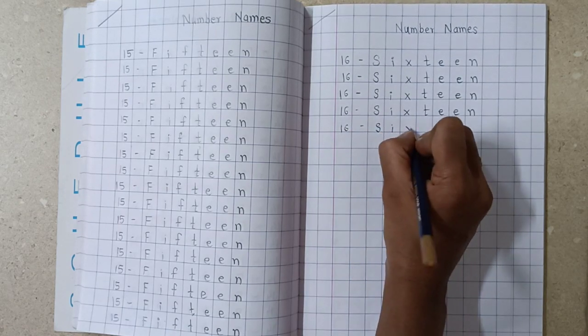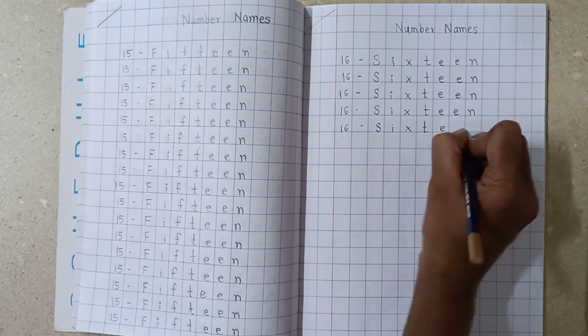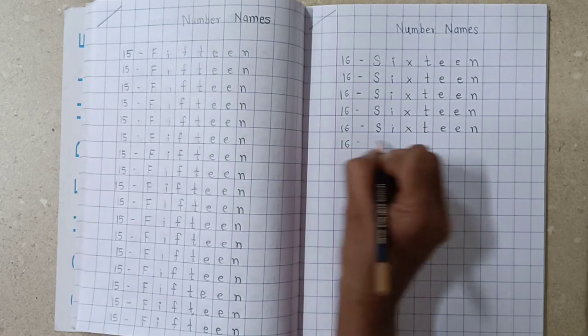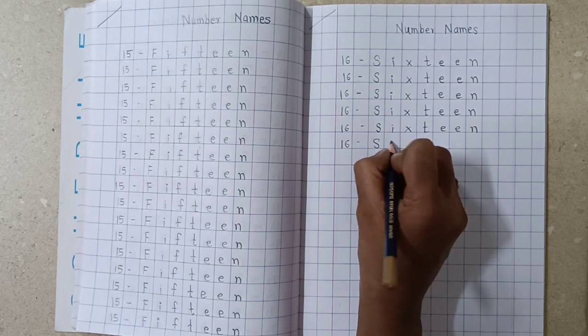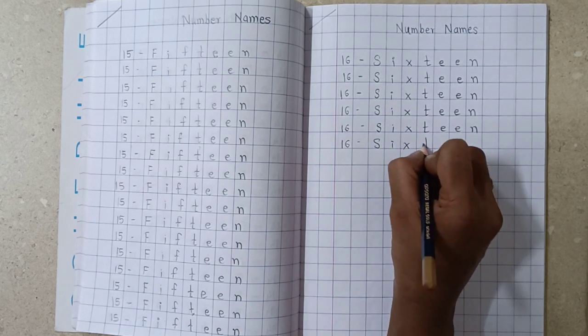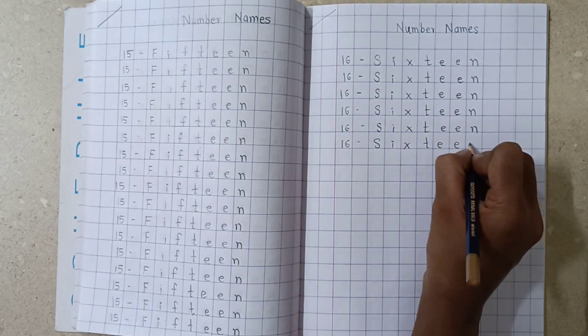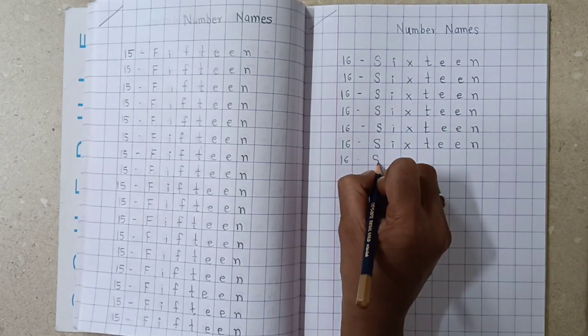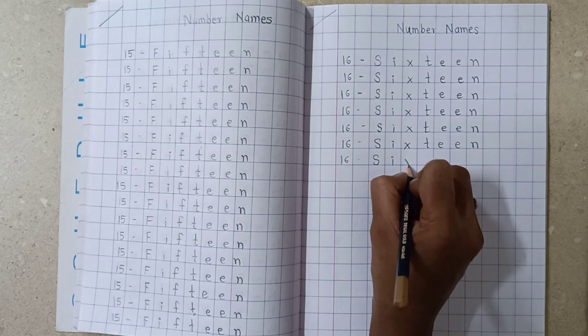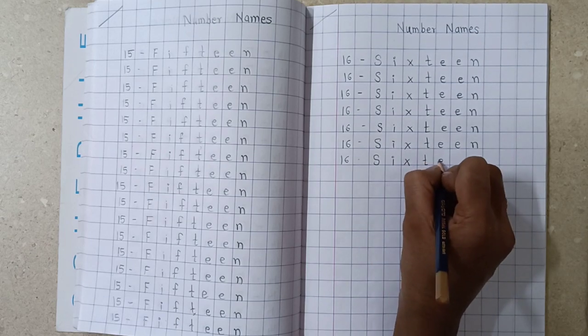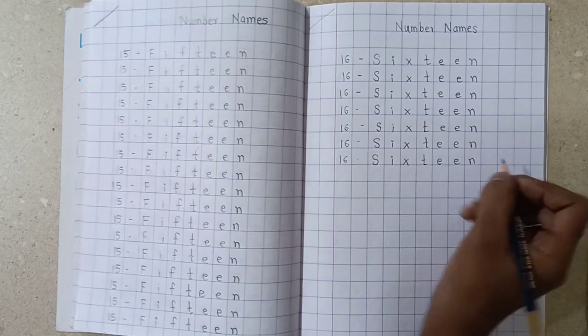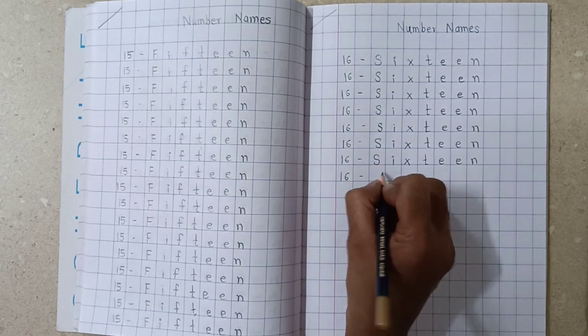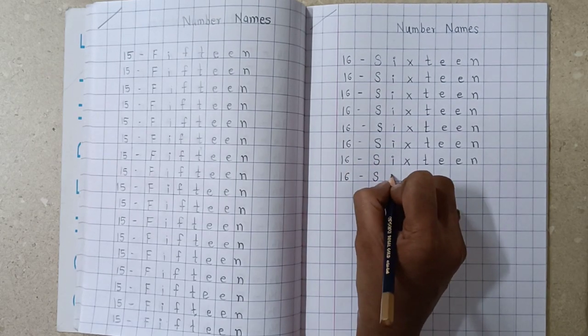S-I-X-T-E-E-N, 16. S-I-X-T-E-E-N, 16. S-I-X-T-E-E-N, 16. Aapko bhi isse bol bol ke number names write down karna hai, aur learn karna hai, okay?